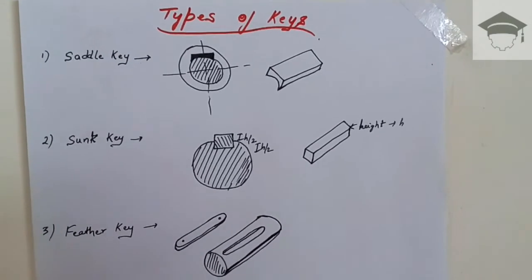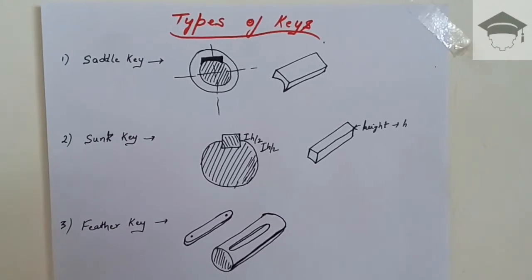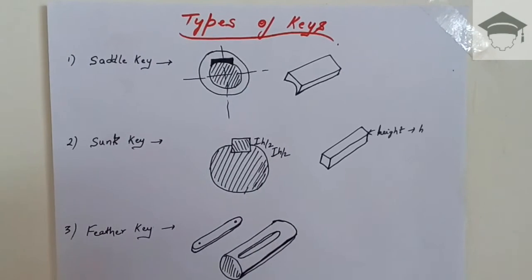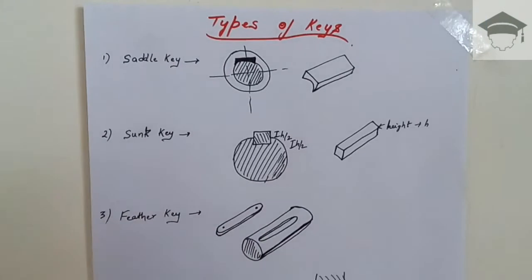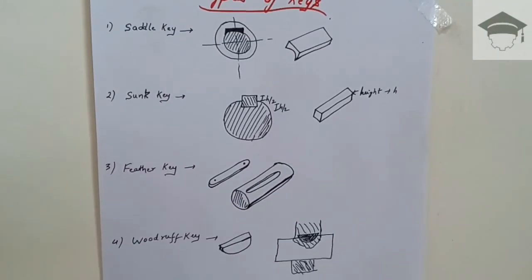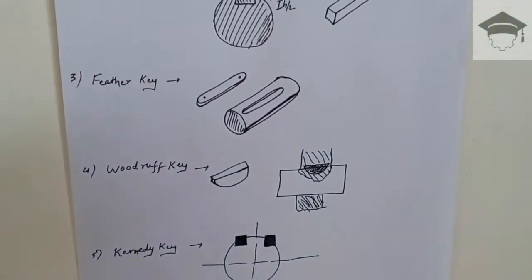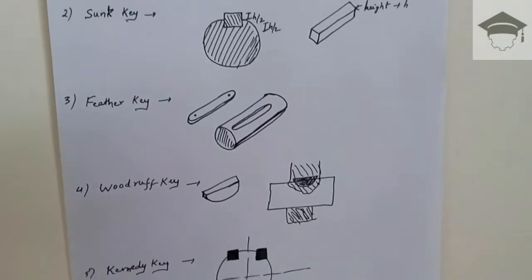There are many types of keys. The major ones are saddle key, sunk key, feather key, woodruff key, and Kennedy key. The function of a key is to transfer torque from the shaft to the hub.